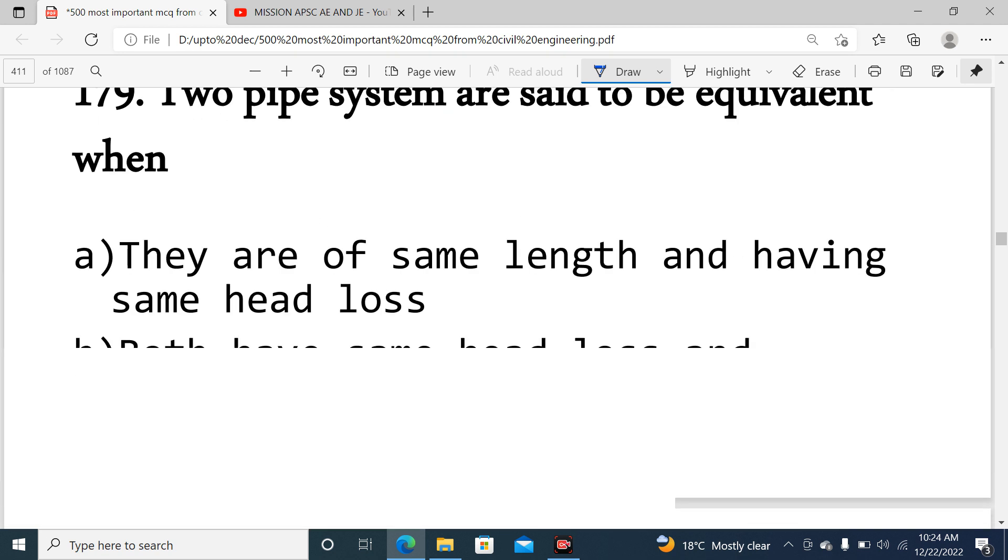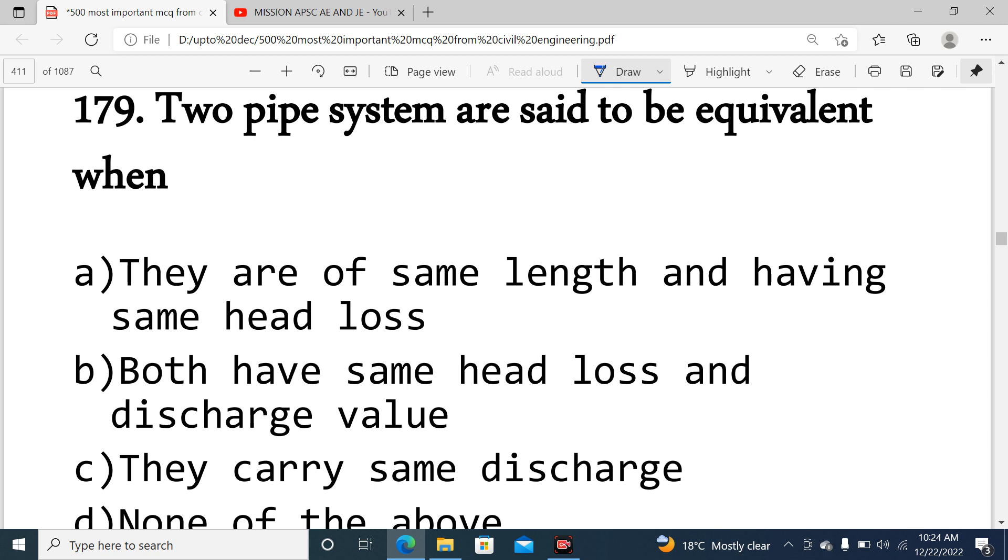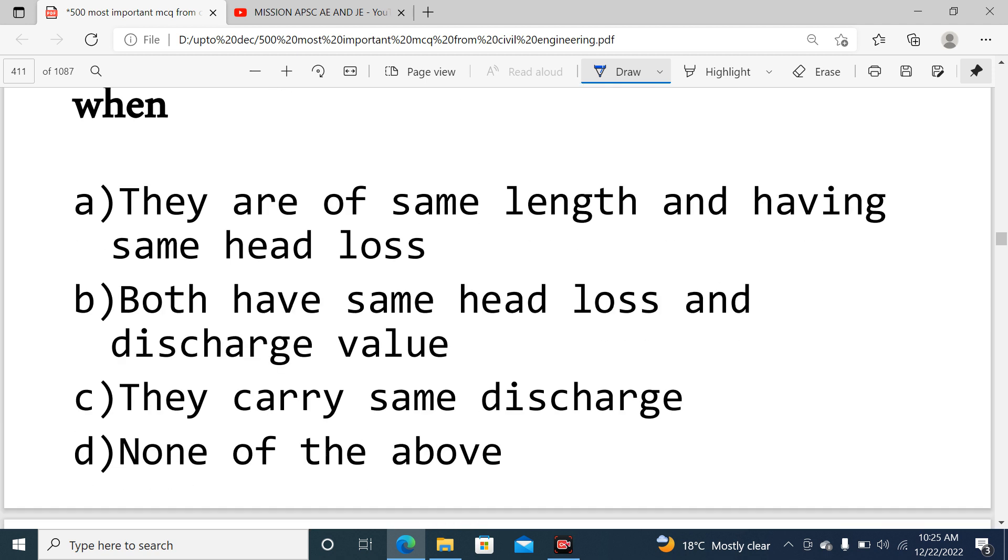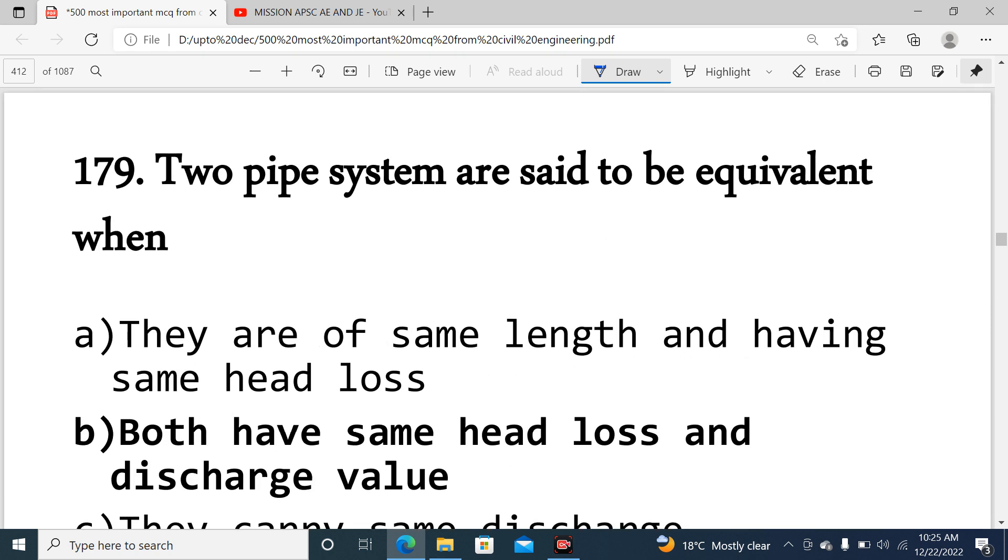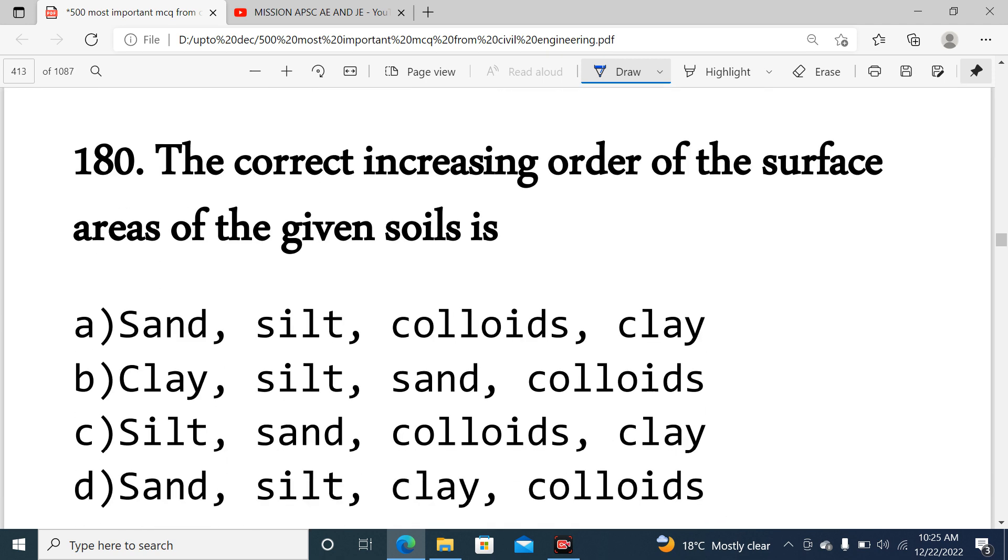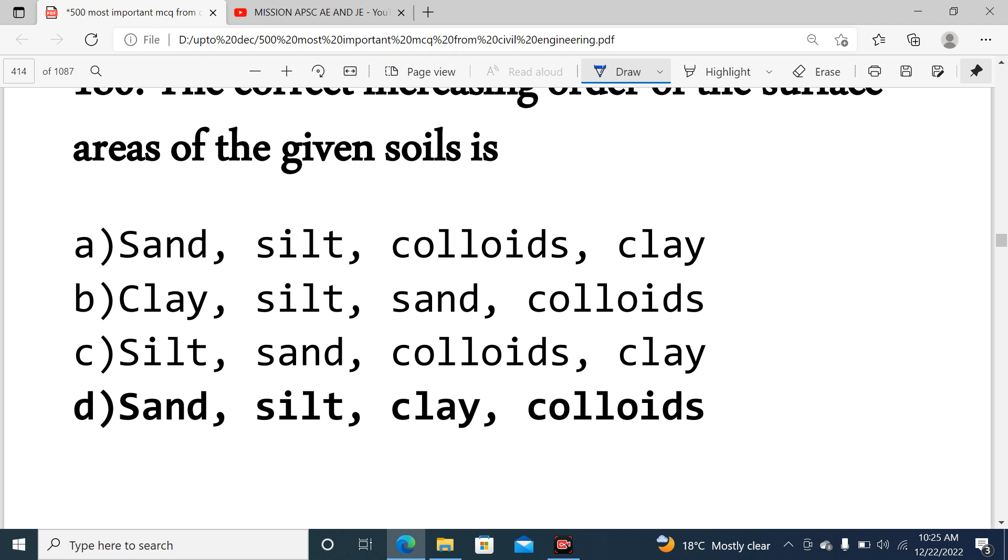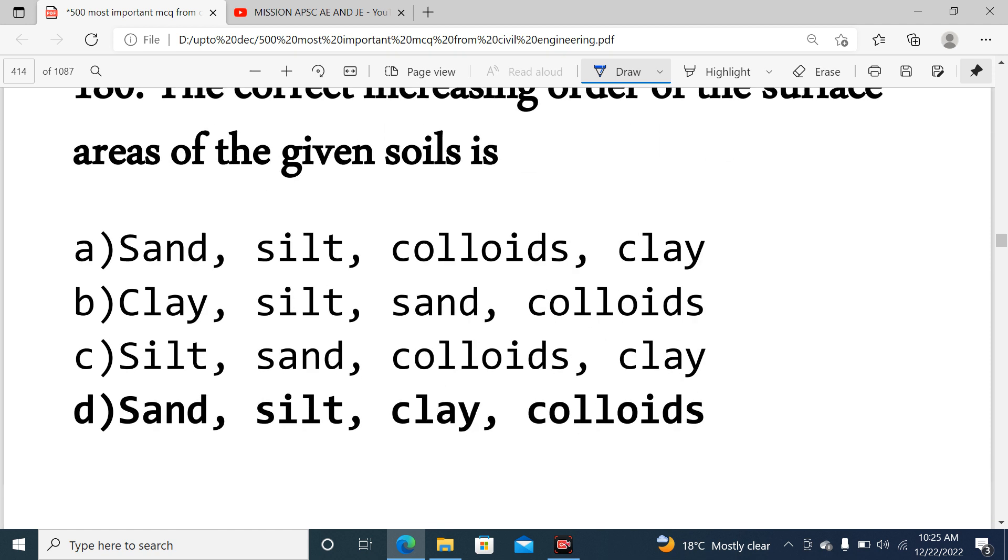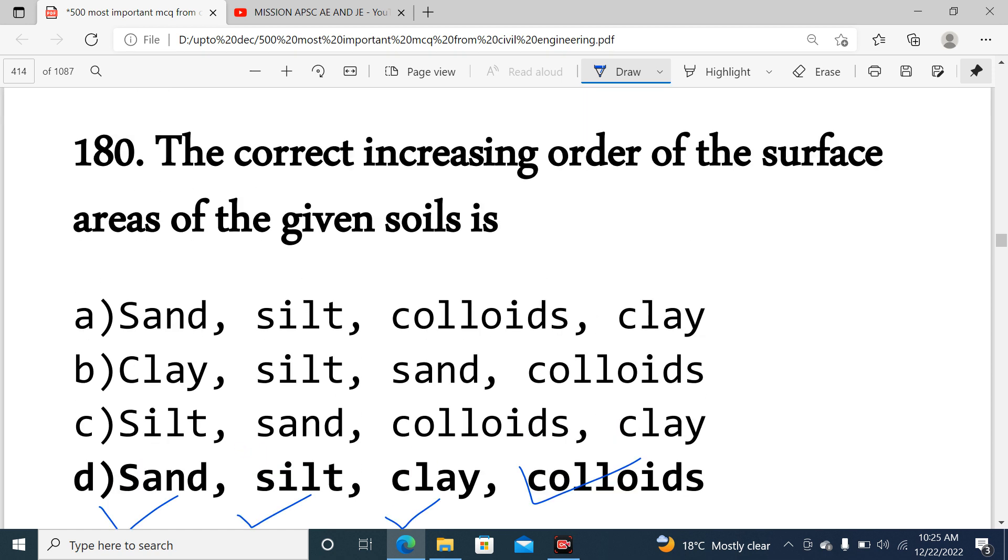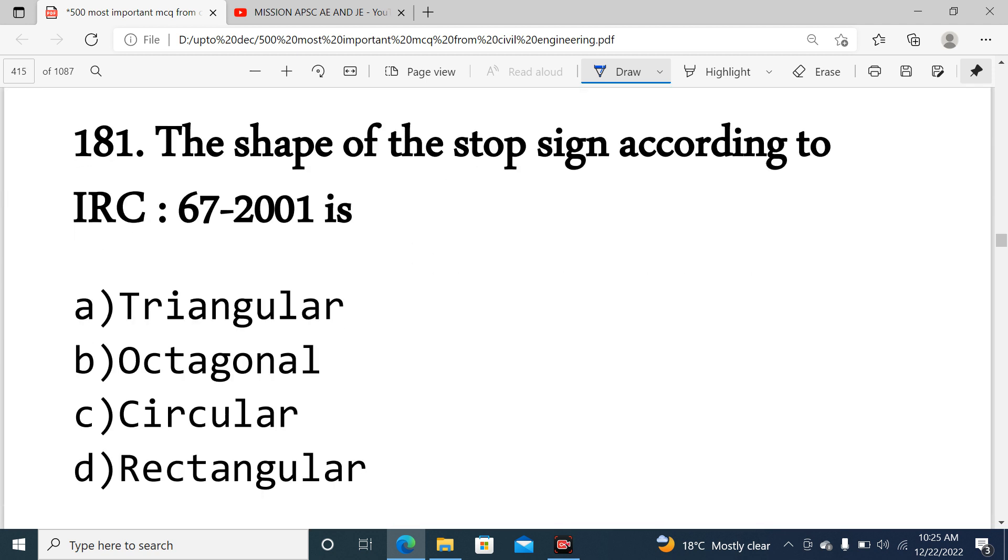Question 179: Two pipe systems are said to be equivalent when they have same head loss and same discharge value. Question 180: Surface area in increasing order is sand, then silt, then clay, then colloids.